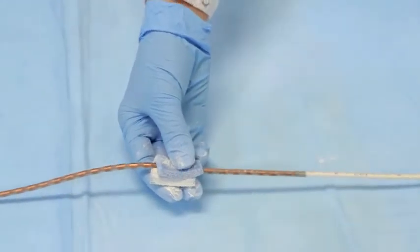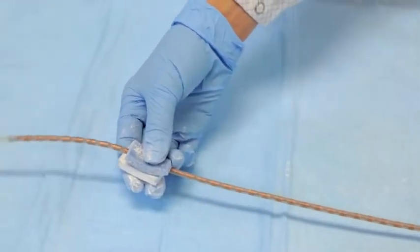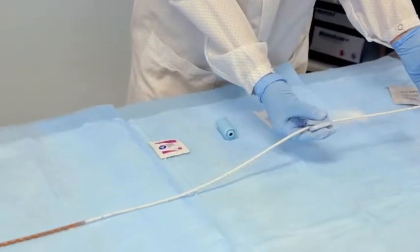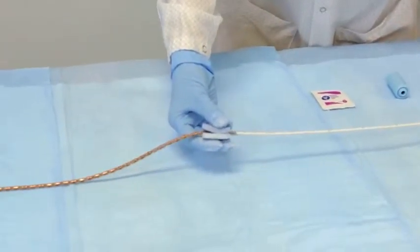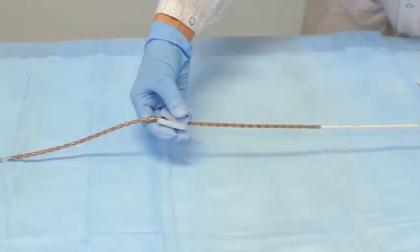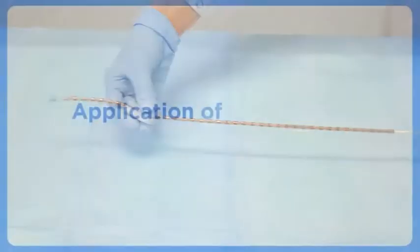Do not allow the catheter to touch the floor or other surfaces. The goal is to apply a light, even coating of talc along the entire length of the catheter.